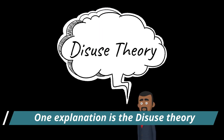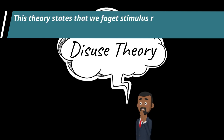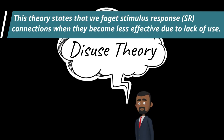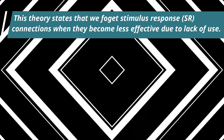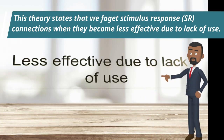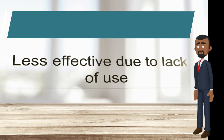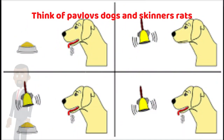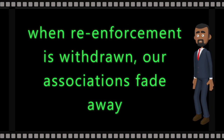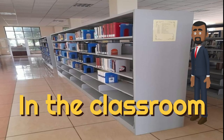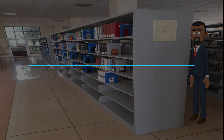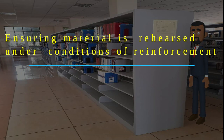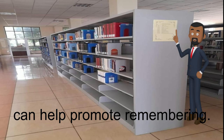According to the disuse theory, we forget stimulus-response connections when they become less effective due to lack of use. Think of Pavlov's dogs and Skinner's rats — when reinforcement is withdrawn, associations fade away. In the classroom, ensuring material is rehearsed and other conditions of reinforcement are met can help promote remembering.